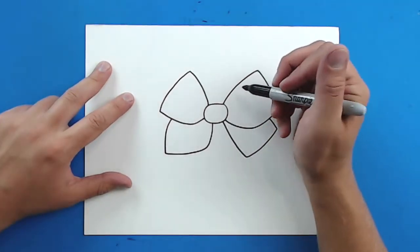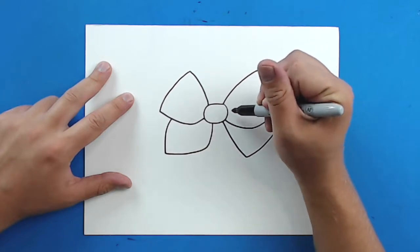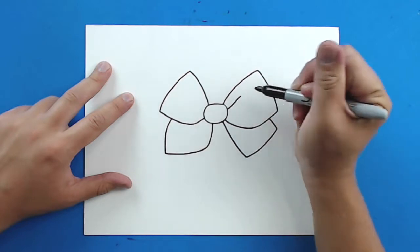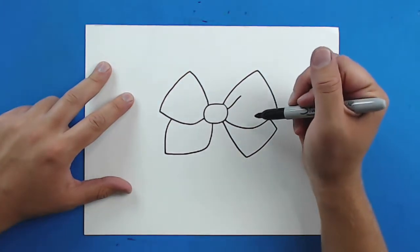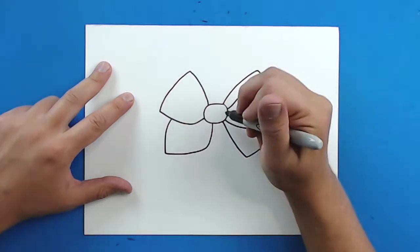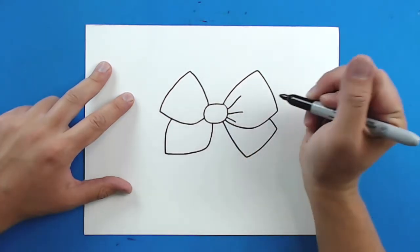Now starting in the inside, I want to draw some lines to show where the fabric is folding. So I'm just going to add a little curved line like this, and then I'll put one more right here, and then one more right there.